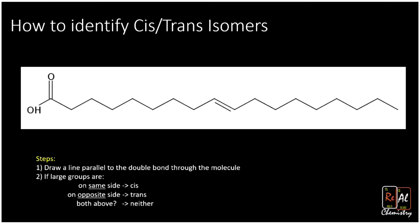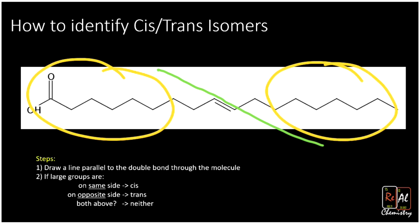Now let's look at another long linear line angle structure. We'll follow the same steps. We'll draw a line through the double bond and then we circle the molecule that's hanging off of that double bond on either side. Notice that they're on opposite sides of the green line. One on the left, one on the right. And so that once again is trans.